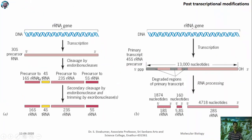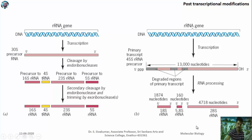Comparing prokaryotic and eukaryotic rRNA processing: prokaryotes produce 16S, 23S, and 5S rRNAs, while eukaryotes produce 18S, 5.8S, and 28S rRNAs. The 5S rRNA in eukaryotes is actually produced during post-transcriptional modification of tRNA molecules.